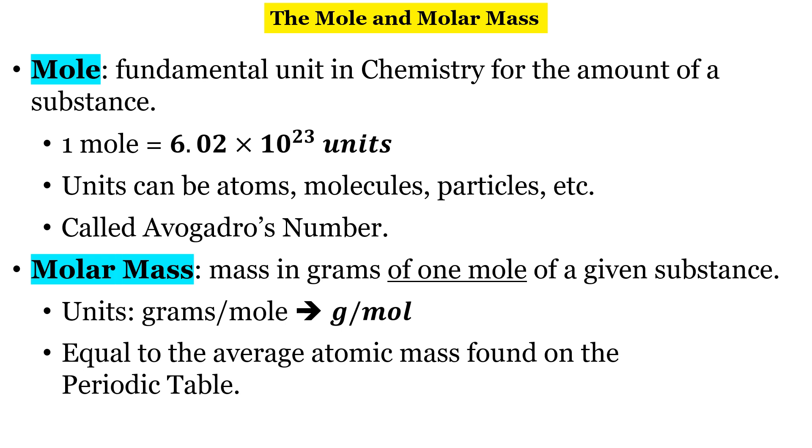One mole is 6.02 times 10 to the 23rd units. Now, those units can be atoms, molecules, particles, etc. This number, the 6.02 times 10 to the 23rd units, this is called Avogadro's number.